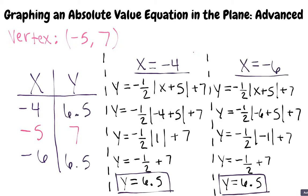As you can see, we plugged in negative 4 to get a y value of 6.5. Then, we plugged in negative 6 and got the same y value. This makes sense because absolute value equations are v-shaped and symmetrical about the vertex. Now can we graph the vertex and these two points? Yeah!